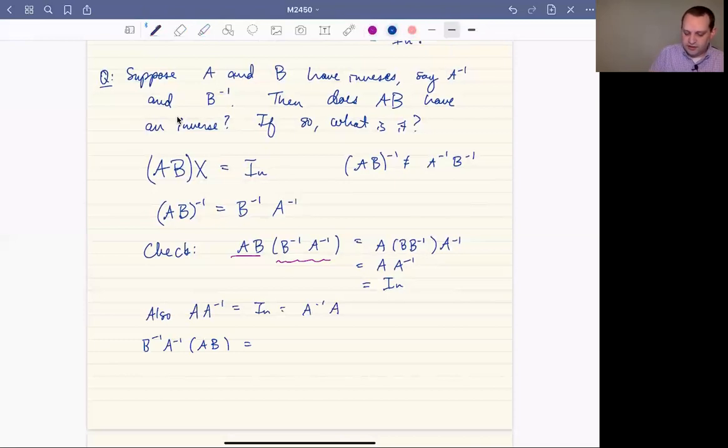You do a very similar calculation. You group the A inverse and A together, you end up with B inverse times B which is the identity. Okay, so it's basically the same calculation there. So that's a property of the identity that we have there.